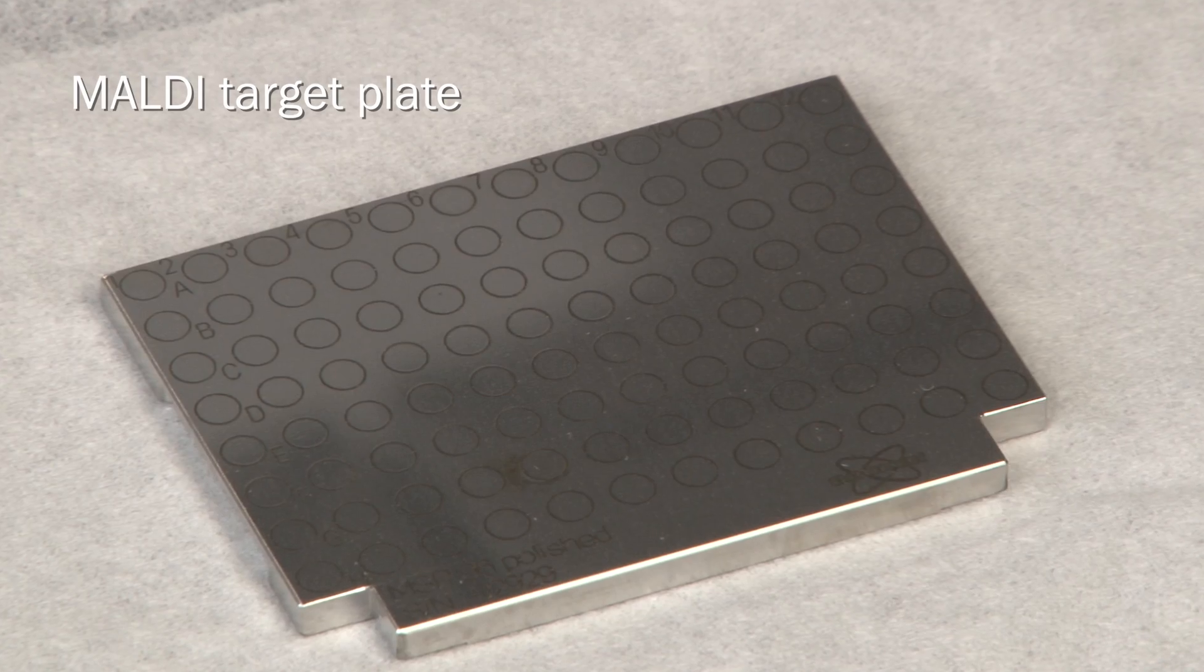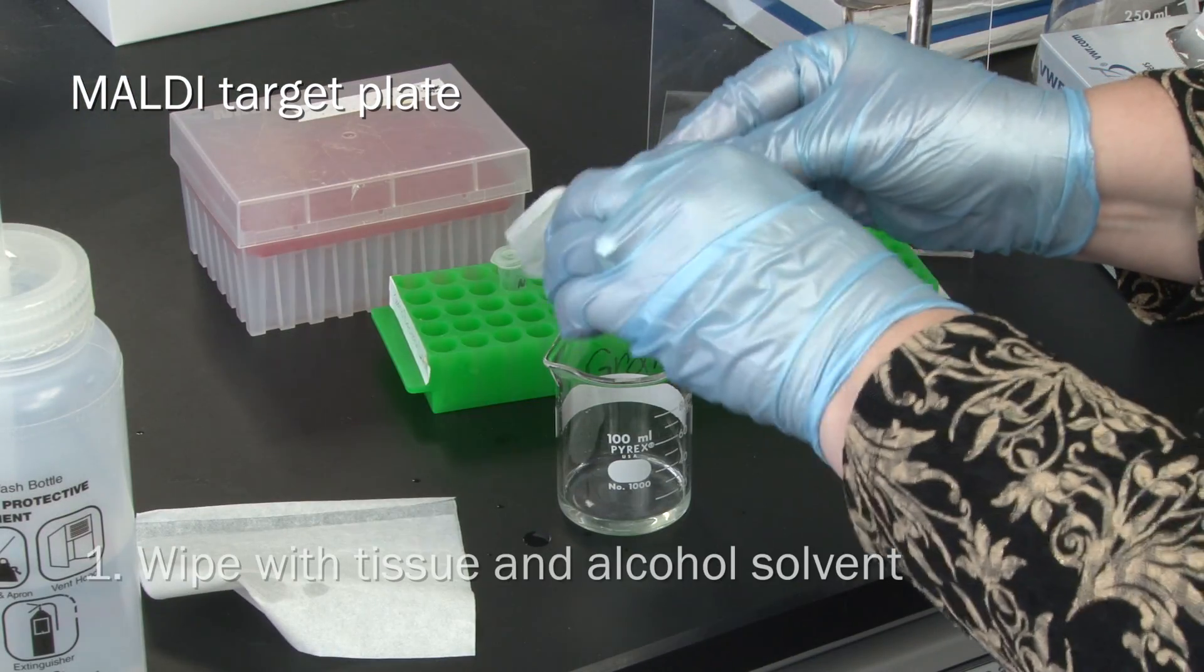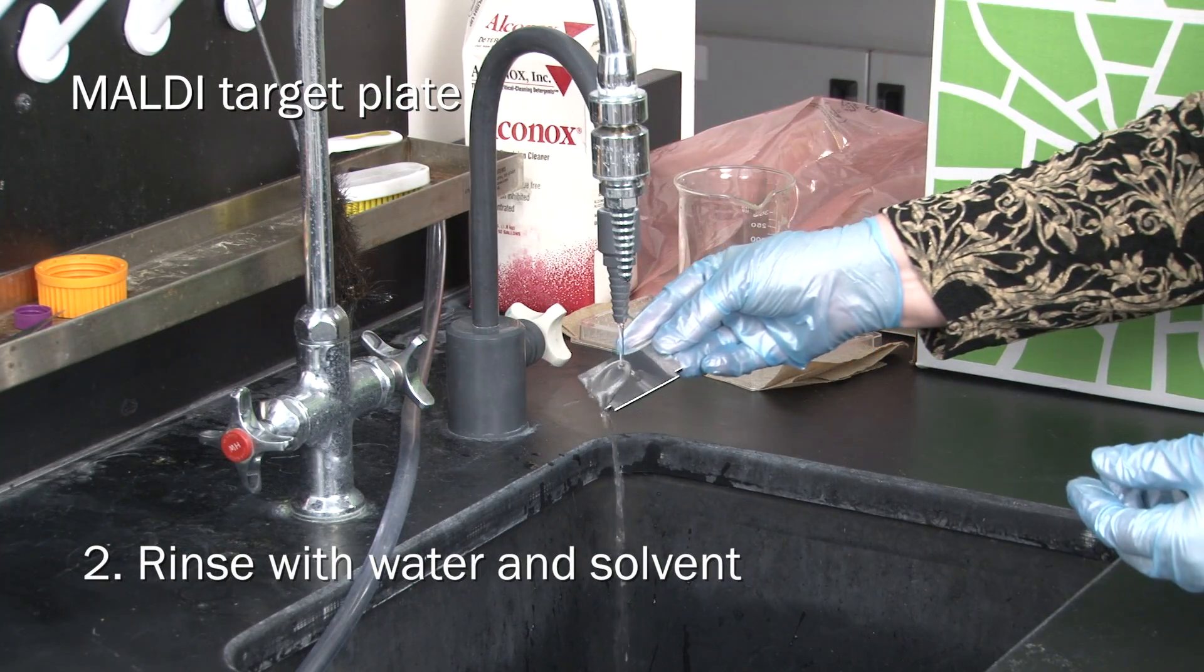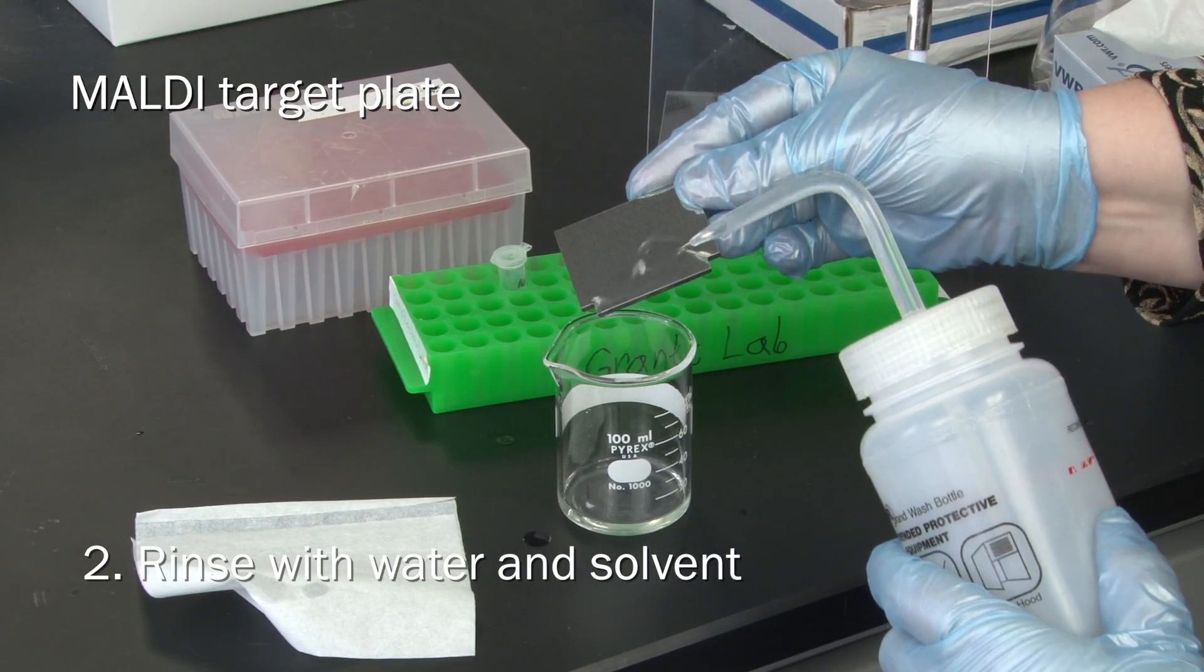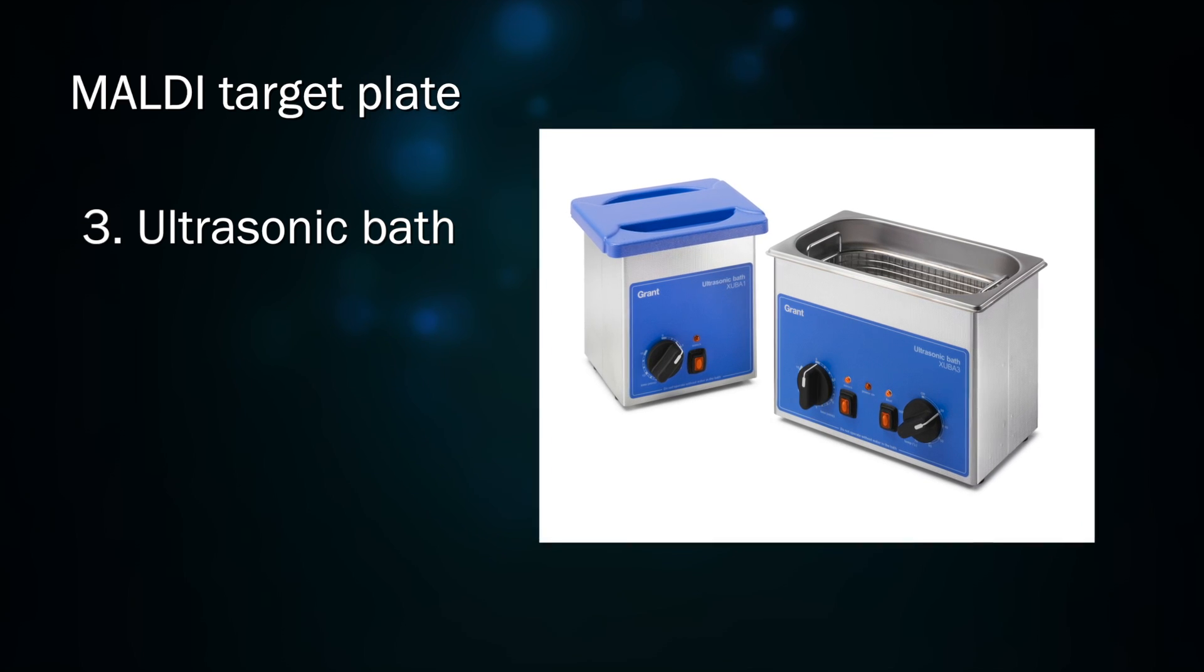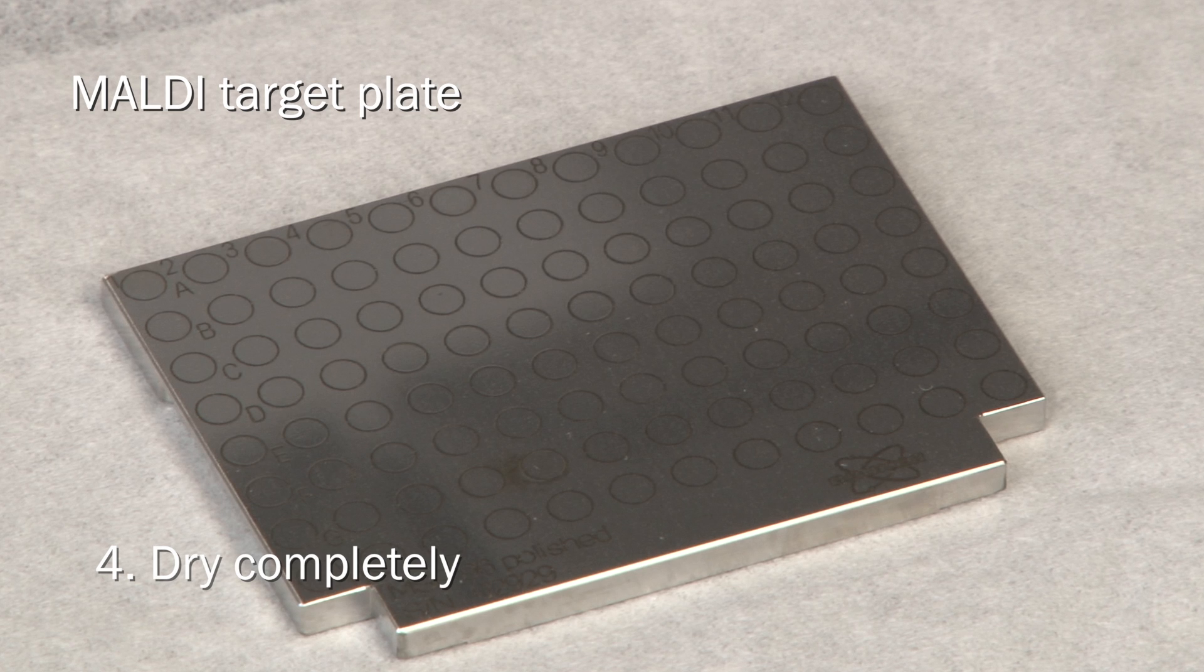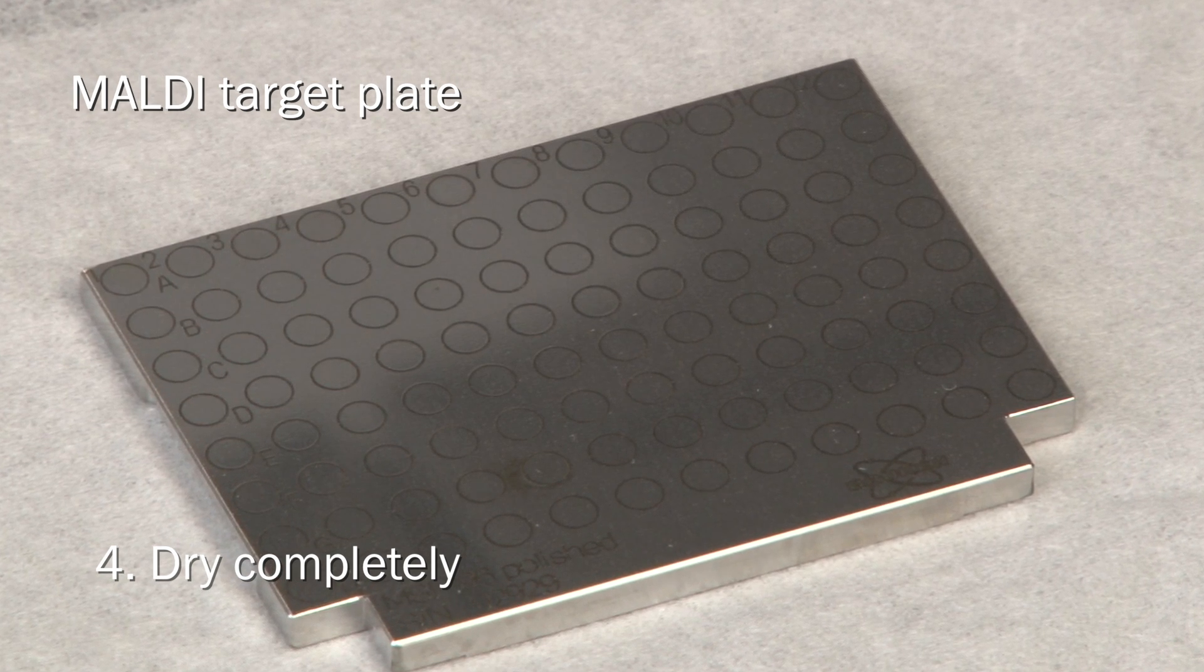The MALDI target plate must be cleaned scrupulously before beginning. Wipe the plate with a tissue wetted with an alcohol such as 2-propanol, ethanol, or methanol. Perform alternating rinses with ultra-purified water and solvent. Optionally, use an ultrasonic bath for more thorough cleaning. Let the plate dry completely, either in a dry, dust-free environment or under a stream of purified inert gas.